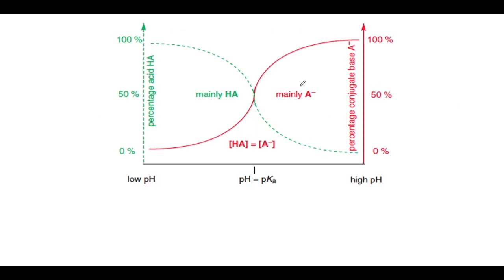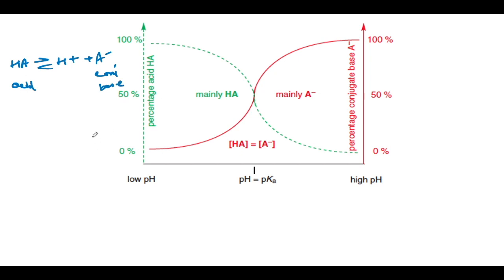Now we consider the equilibrium: HA ⇌ H⁺ + A⁻. H⁺ is the hydronium ion and A⁻ is the dissociated acid. When considering HA as the acid, A⁻ is called the conjugate base, from the Brønsted acid-base theory. We are going to plot the percentage concentration of the acid as well as the conjugate base versus the pH value.